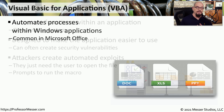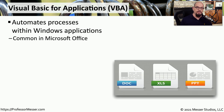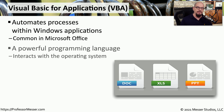In the Microsoft Office line of products, Microsoft has taken the idea of macro to a completely new level. This is Visual Basic for Applications, or VBA, and it's a way to provide extensive automation inside of Microsoft Office. Not only is VBA able to interact inside of Microsoft Office, there are also hooks in VBA that can talk directly to the operating system.